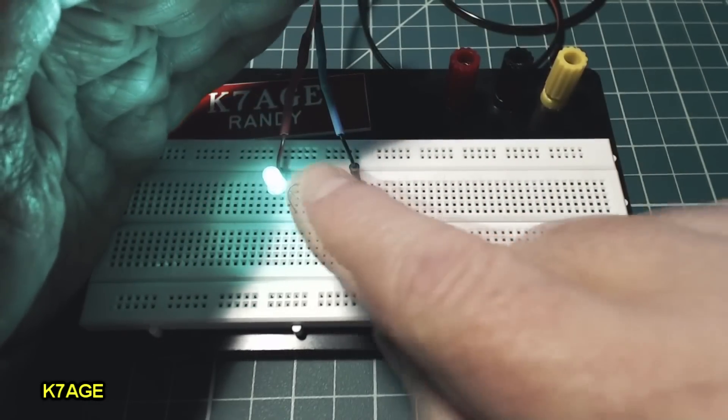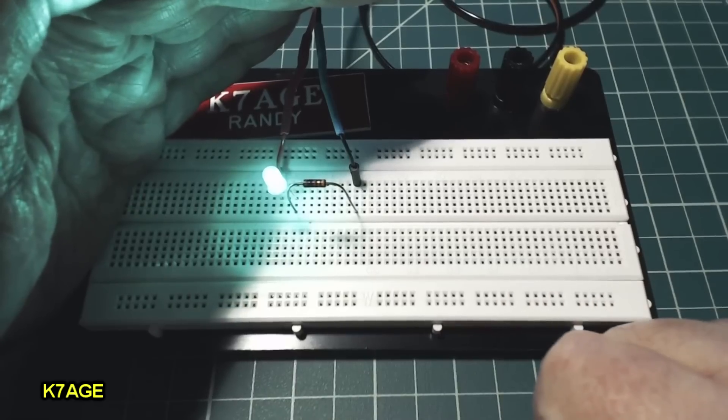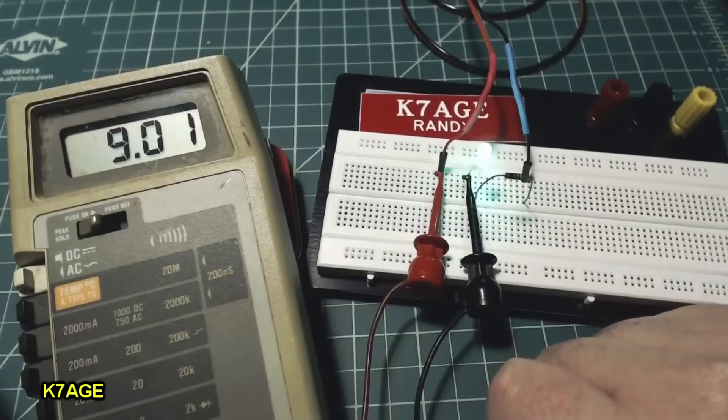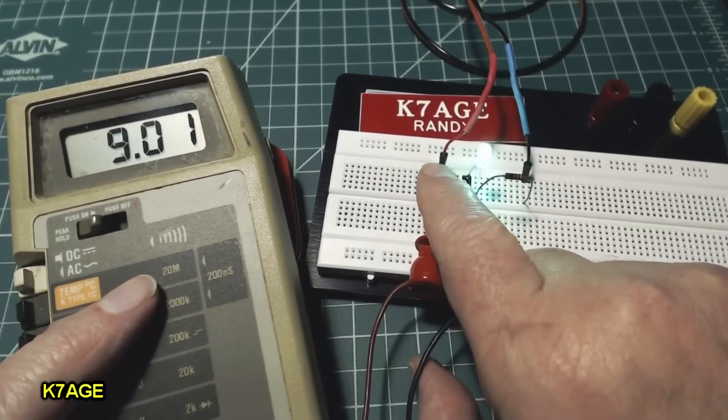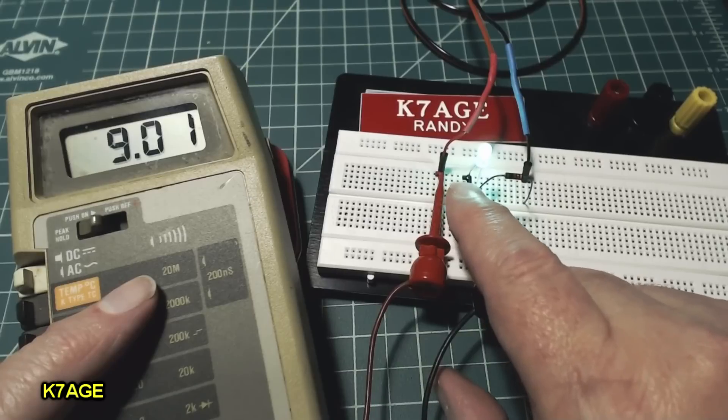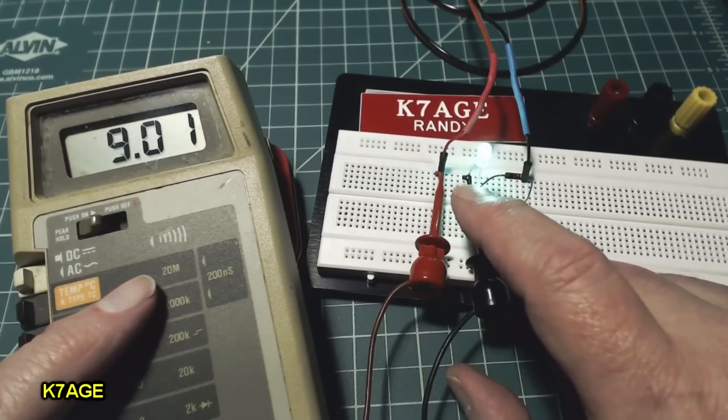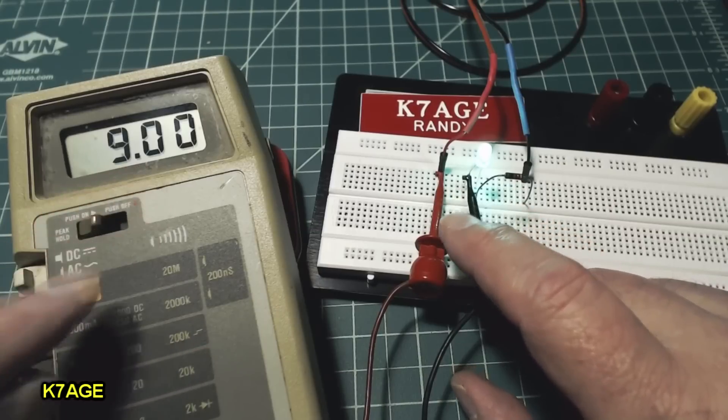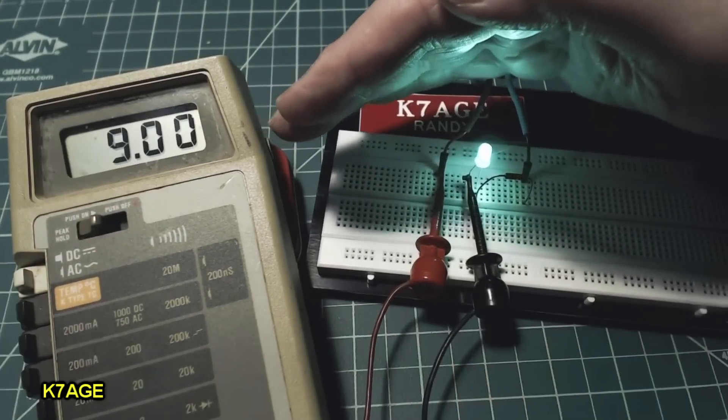So 10 milliamps is plenty bright enough. So we'll use the 1K resistor. So to check the current, I put my meter in series with the positive lead coming out of the battery to the positive lead of the LED, and it's showing 9 milliamps. So we got close. Good enough. It's nice and bright.